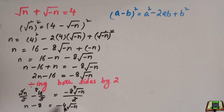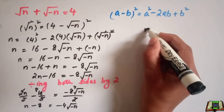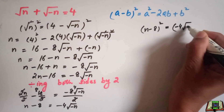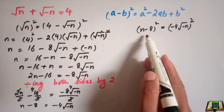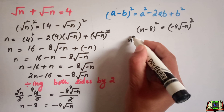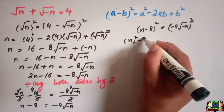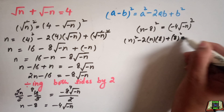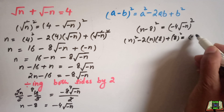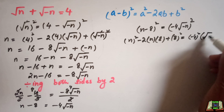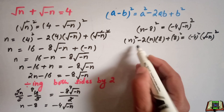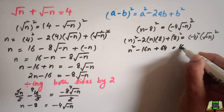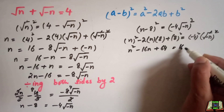Once again, we will take the square of this equation on both sides. So n minus 8 whole square equals minus 4 square root of minus n, whole squared. We can see that again this is in the form of a minus b whole square, giving us n squared minus 2 times n times 8 plus 8 squared, which equals 16 times minus n, since square and root cancel out.